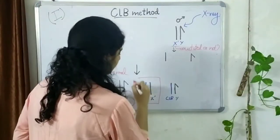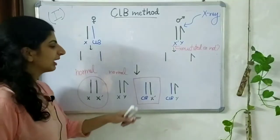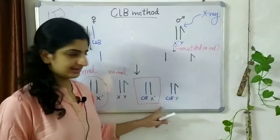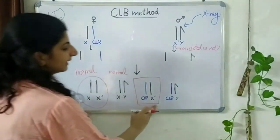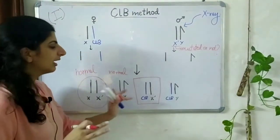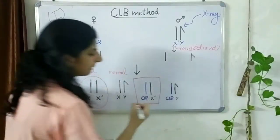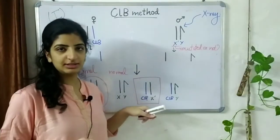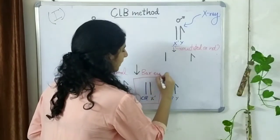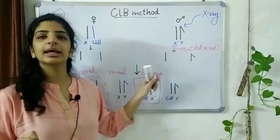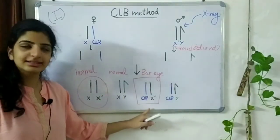This CLB X dash is the progeny that we need. How we will identify is this X X and the CLB X dash are both females. However, because there is a presence of this capital B or the bar eye gene in this, we will see bar eye phenotype in the flies. And therefore, we can easily recognize this progeny.